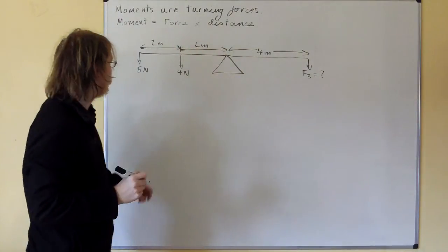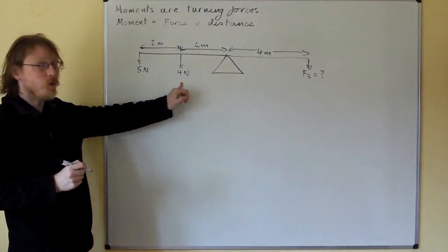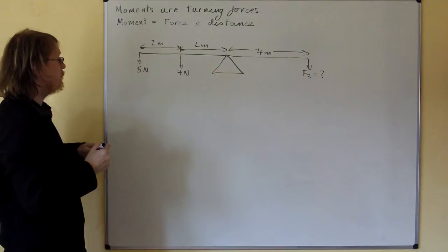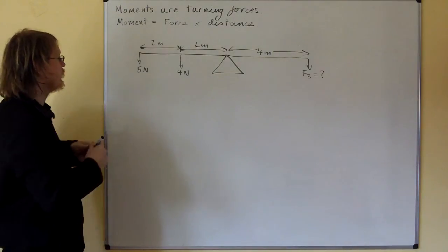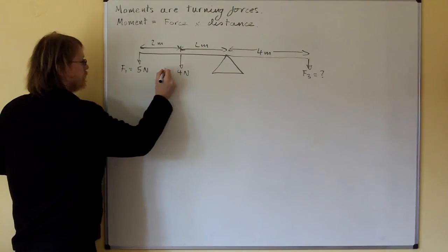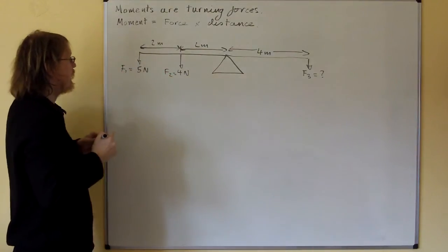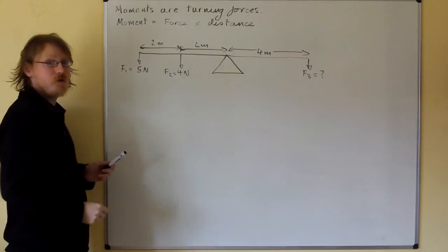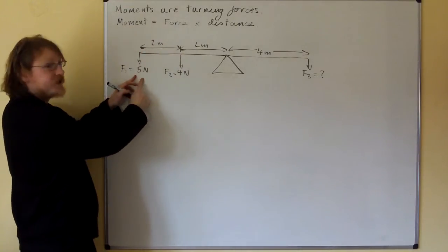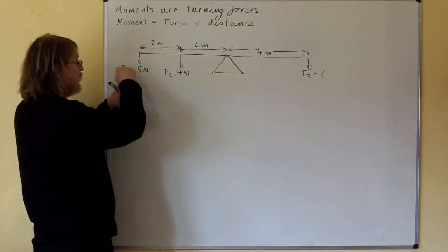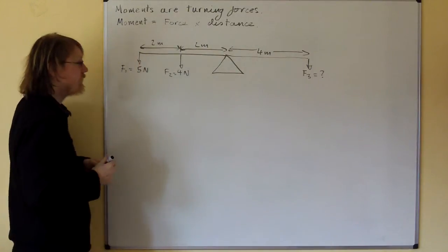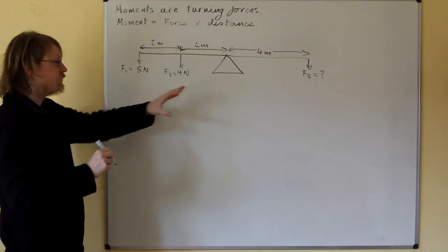Now we're looking for F3. We know F1, we know F2. Right, now, let's look at D1. A common mistake would be to say that this moment from this force, F1, would be 5 newtons times 2 metres. But it's not. This force is actually 4 metres away from the pivot.